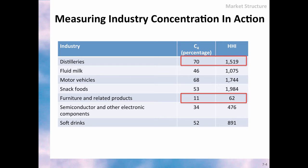For example, in this table you can see that the furniture and related products market is less concentrated than, say, the distilleries market. As a general rule, companies in more concentrated industries enjoy a higher degree of market power, which means more control over market prices, which of course can be translated into higher profit levels.